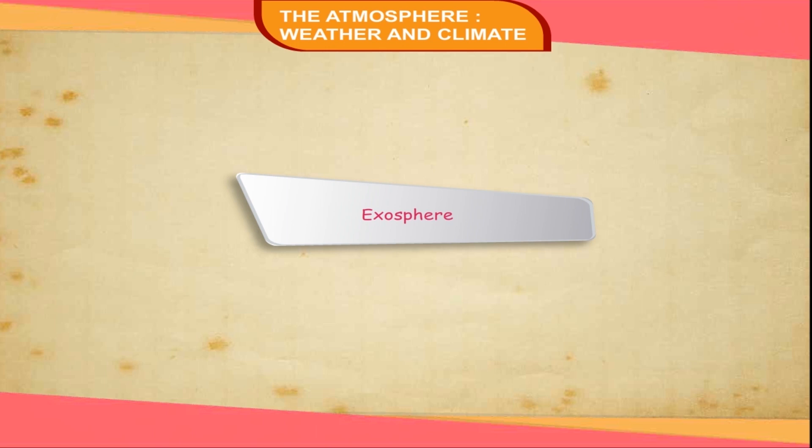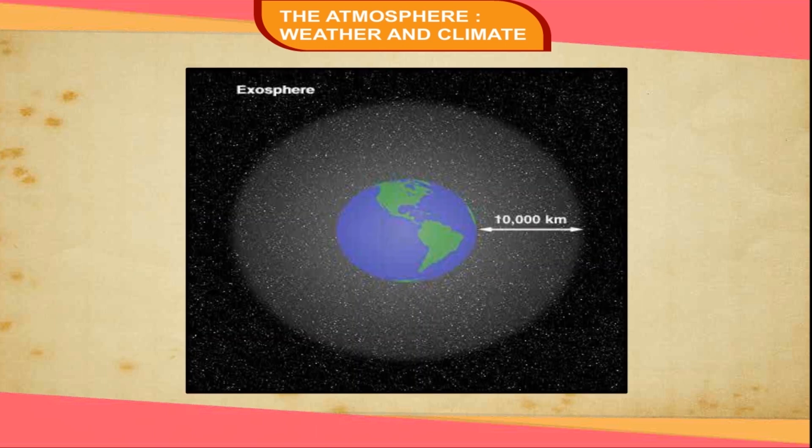Exosphere. The outermost layer of the atmosphere is called the exosphere. The air thins in this sphere until it ultimately merges into outer space. The temperature increases rapidly in this layer because of the solar radiations.